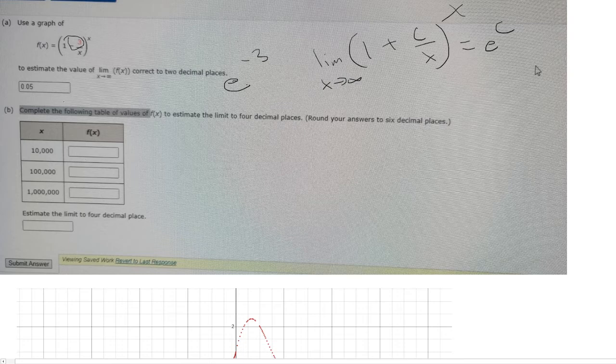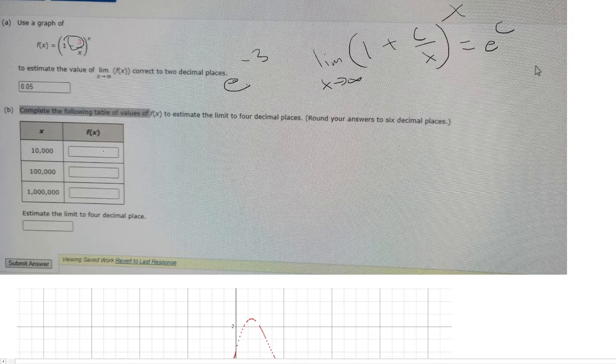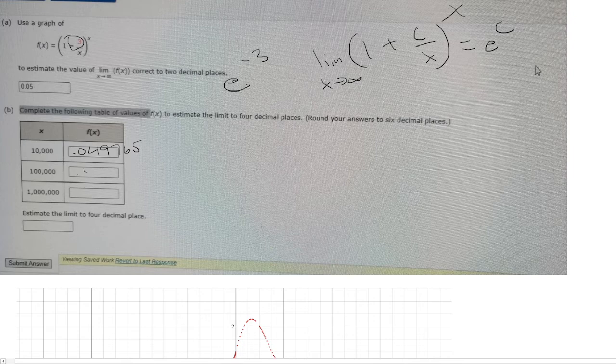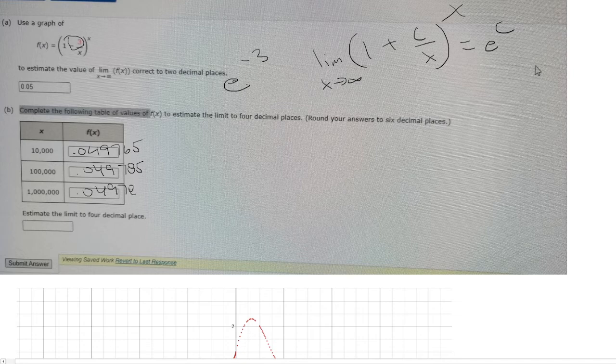Now we can plug in values to f(x), so when x is 1,000 or 10,000, we want to round it to 6 decimal places. So it would be 0.049765, and then 0.049785, and 0.049787.